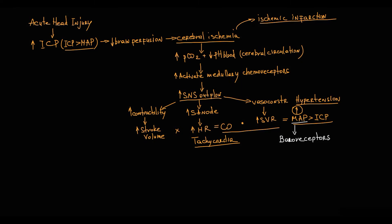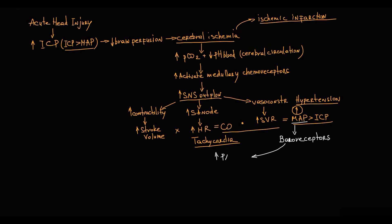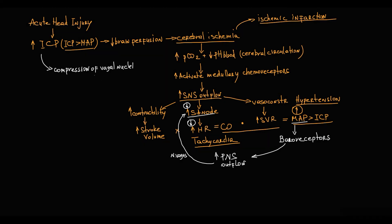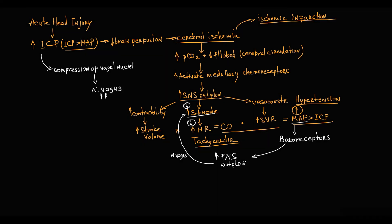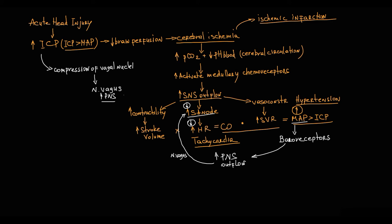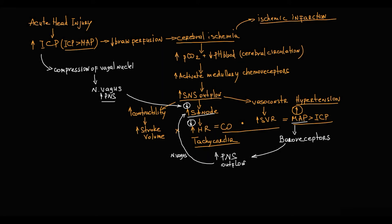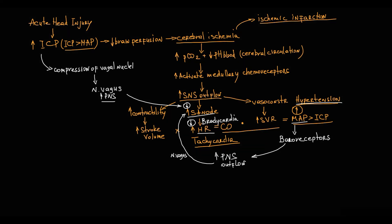Then, the increased blood pressure is sensed by baroreceptors on the aortic arch. To decrease blood pressure, they increase parasympathetic nervous system outflow through the vagus nerve, decreasing sinoatrial node activity and causing a decrease in heart rate. Additionally, increased intracranial pressure causes compression of the vagal nuclei, stimulating their activity and further increasing parasympathetic outflow through the vagus nerve, contributing to bradycardia.